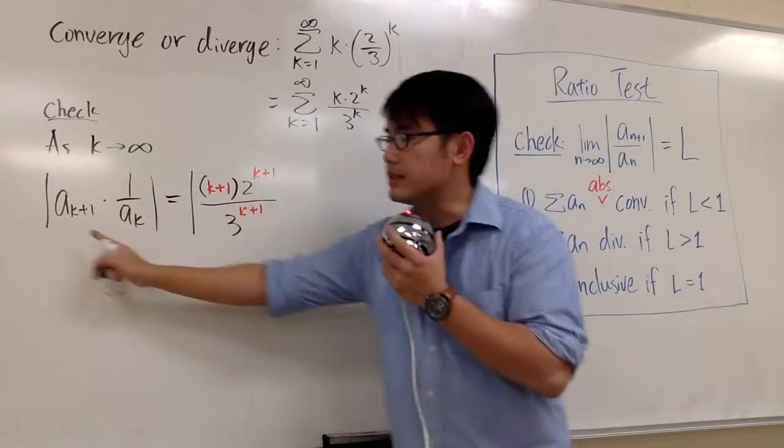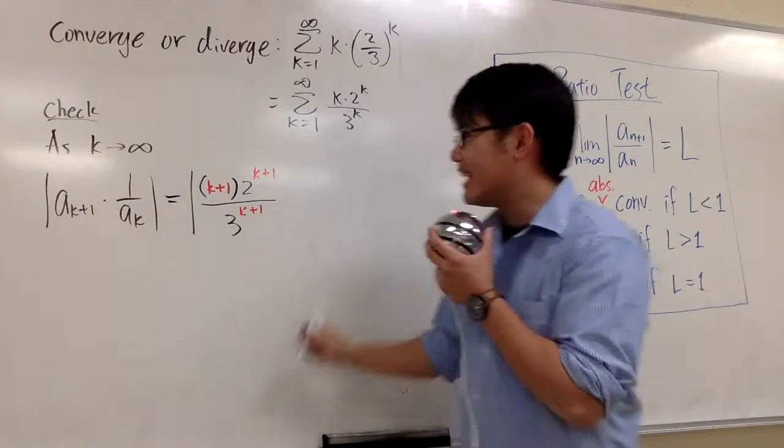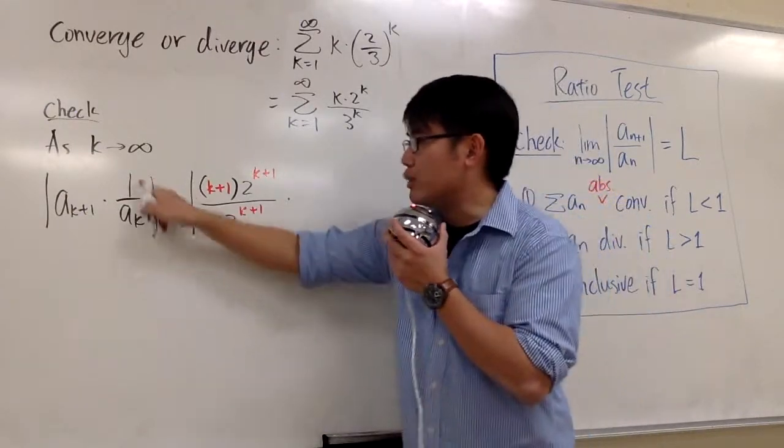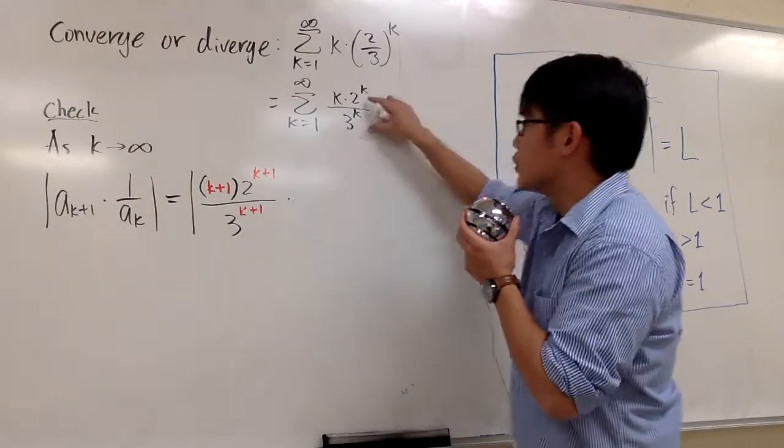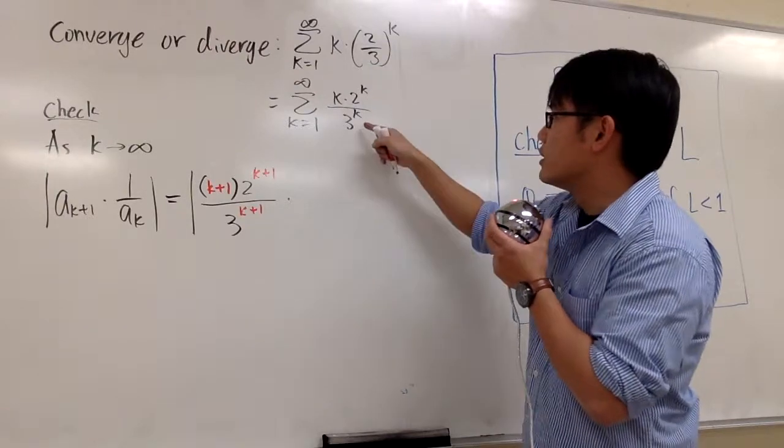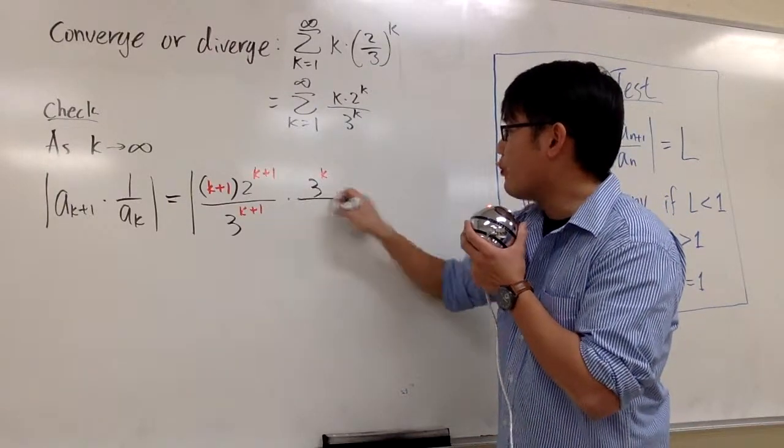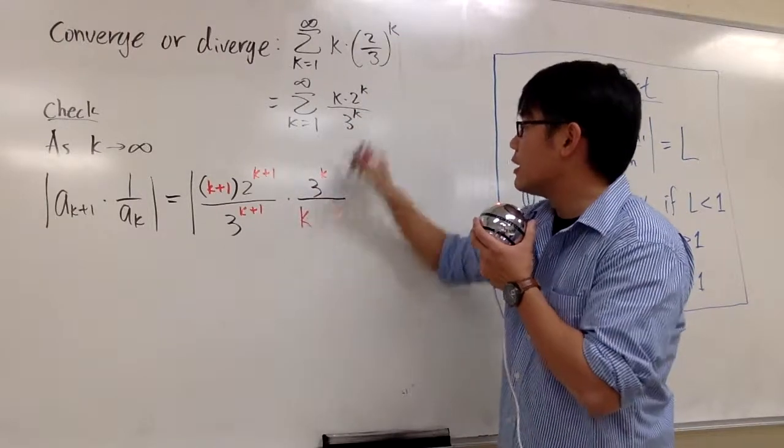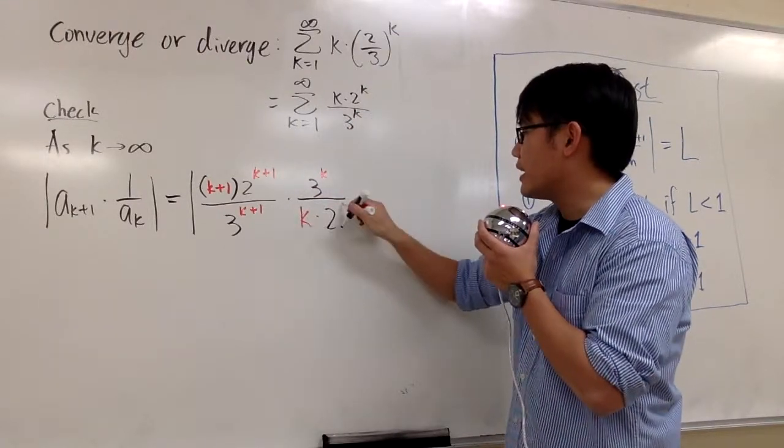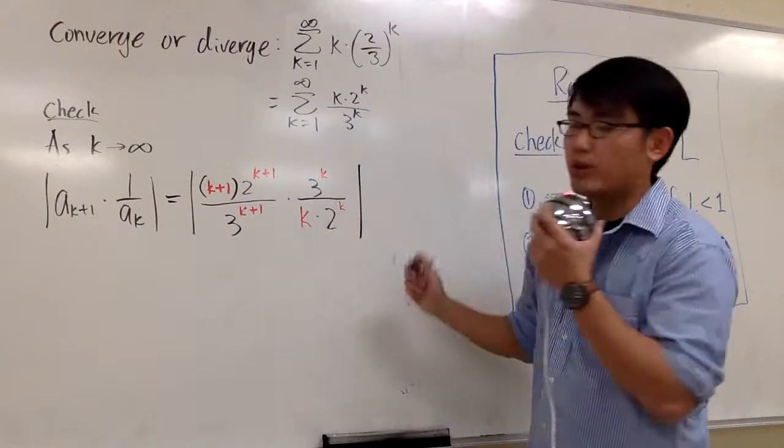So this right here is the a_(k+1) expression. And now we multiply by the reciprocal of a_k. So we just look at this and then flip that. So we will have 3 to the k on the top over k times 2 to the k.